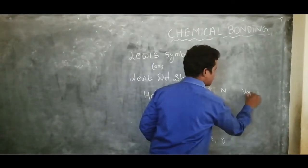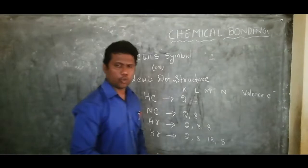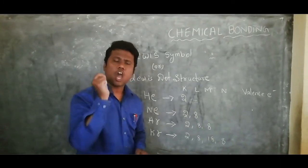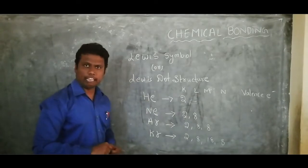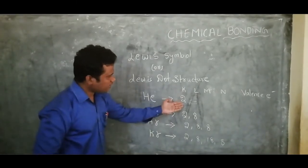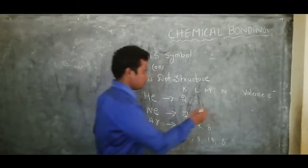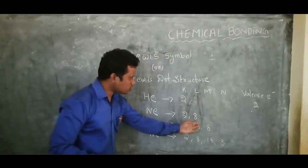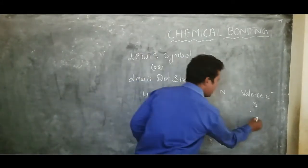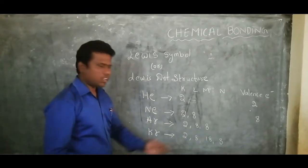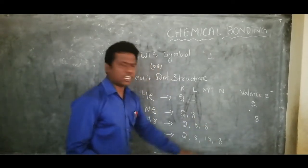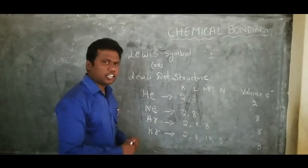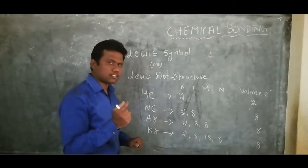Children, what do you mean by valence electrons? Valence electrons are nothing but the number of electrons present in the outermost shell — that means the last shell. For helium, it has only one shell K, so its valence electrons are 2. For neon, the last shell is L, so the valence electrons will be 8. For argon and krypton, the outermost shell also contains 8 electrons.